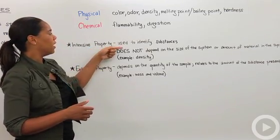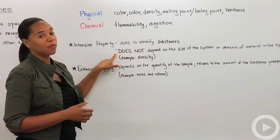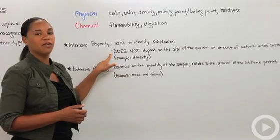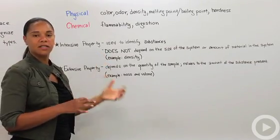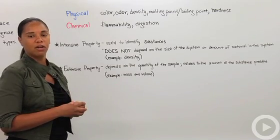An intensive property is used to identify a substance. The more important part is that it does not depend on the size of the system or the amount of material that's in the system. An example of that is density. Density is the same no matter of a substance, no matter how much or how little of it you have.